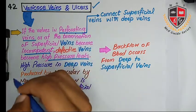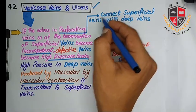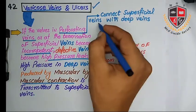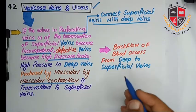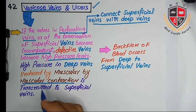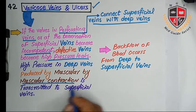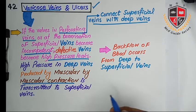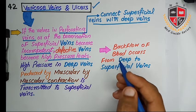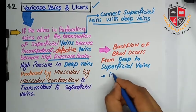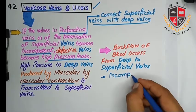What are the perforating veins? Perforating veins are those veins that connect superficial veins with the deep veins. When the high pressure in deep veins, which is produced by muscular contraction, is transmitted to the superficial veins, backflow of blood occurs from deep to superficial veins. This causes incompetency in superficial veins.